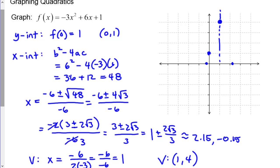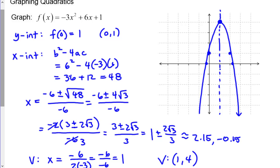Using the axis of symmetry through the vertex: the y-intercept is one unit to the left of the vertex, so by symmetry there's another point one unit to the right. With all key points plotted, sketch the parabola through them.